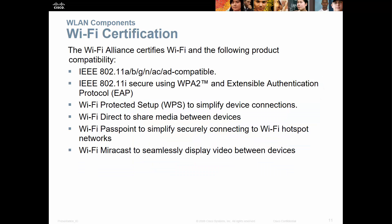Wi-Fi certifications come from the Wi-Fi Alliance, covering 802.11 b/g/n/a/c/d compatibility. Appropriate security certifications include WPA2 and WPS. There are also things like Miracast, which allows seamless video display between devices. These certifications verify that certain technologies work together.